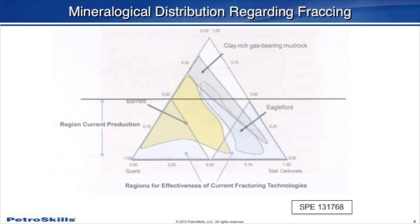This slide is a triangle diagram showing the mineralogical distribution of quartz, carbonates, and shales in rock. In order to be economical, the reservoir has to be south of the 50% shale line. The Barnett Shale falls more on the quartz section of the distribution triangle, while the Eagle Ford has more of a carbonate component. So we can find economical plays on both sides — either more quartz or more carbonate — but definitely the lower the shale content, the better.